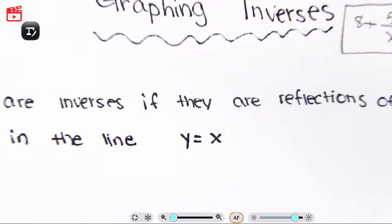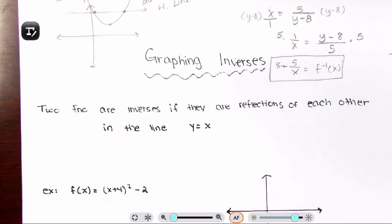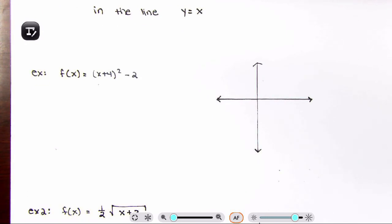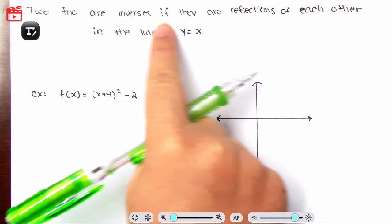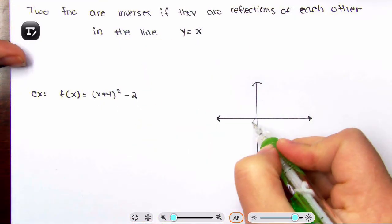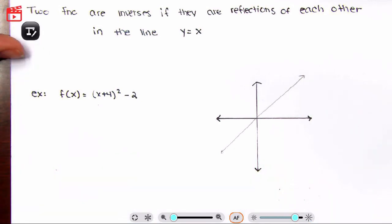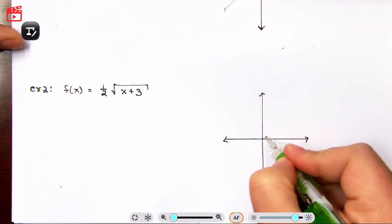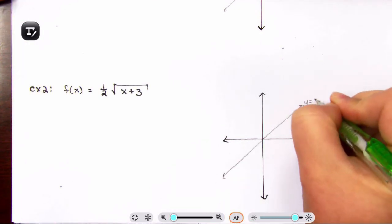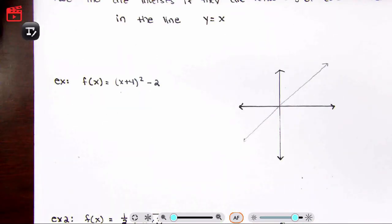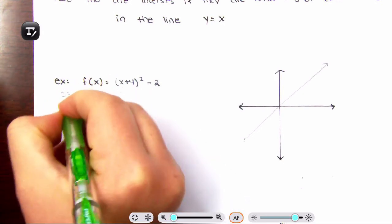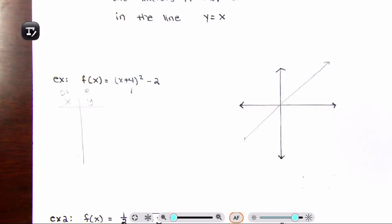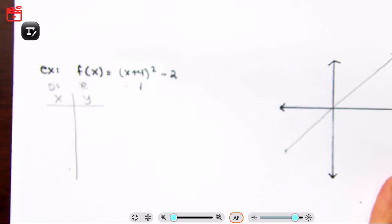Now let's talk about graphing inverses. Two functions are inverses if they are reflections of each other across the line y equals x. You know how we had a reflection across the y-axis for odd and even functions? This is the reflection across y equals x. For every function that has an inverse, the inverse is going to be a mirror image across y equals x. The easiest way to graph it: use domain and range, plug and chug. We'll later use transformation of functions to graph more easily.